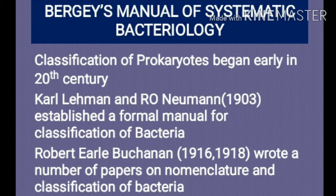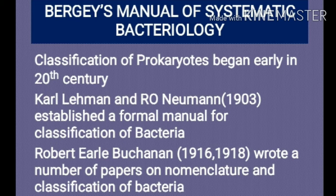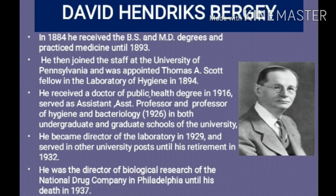Later, a number of bacteria were identified and significant characteristics including biochemical activities, metabolic activities, serology, and pathogenicity were studied by different scientists. Those characteristics were also incorporated in identification and classification of bacteria. Between 1916 and 1918, Robert Earle Buchanan wrote a number of papers on the nomenclature and classification of bacteria, which provided the ground for further activity.